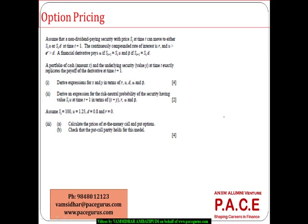Let us look at this numerical with respect to option pricing, deriving the value of the option. Assume a non-dividend paying security with price St at time t. It can move to either St times u — so there is a growth of u, an increase by u at time t plus 1 — or St times d. These are the two possible movements, so it is a binomial model.